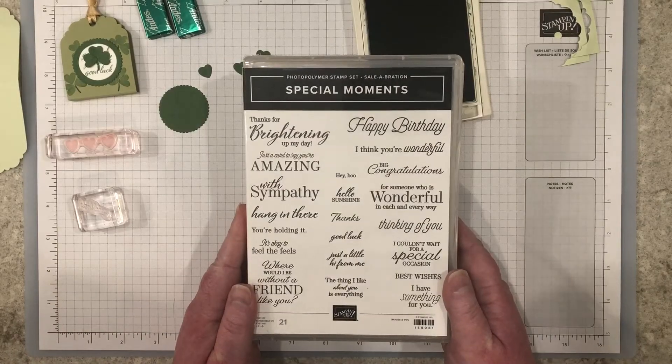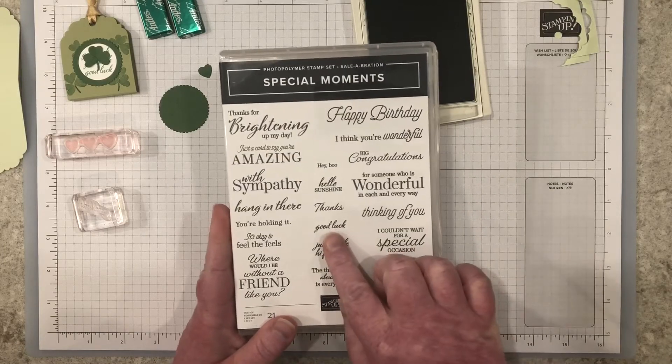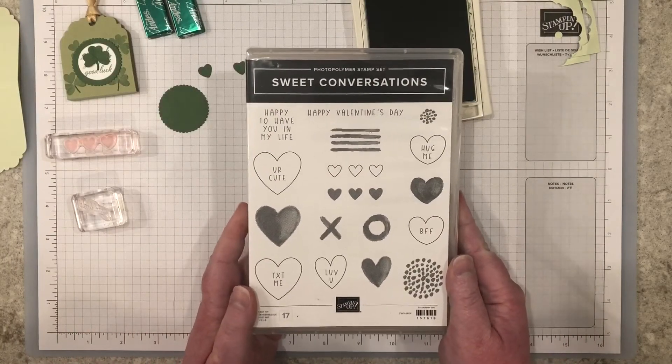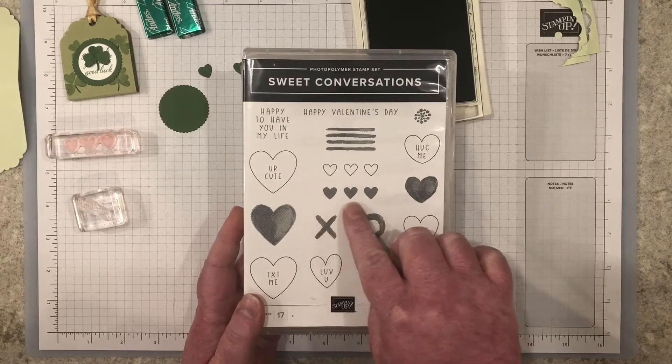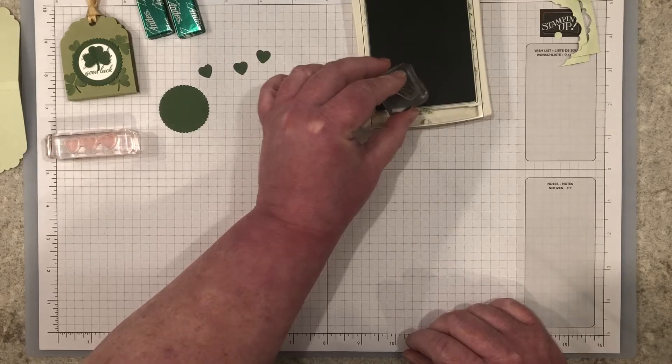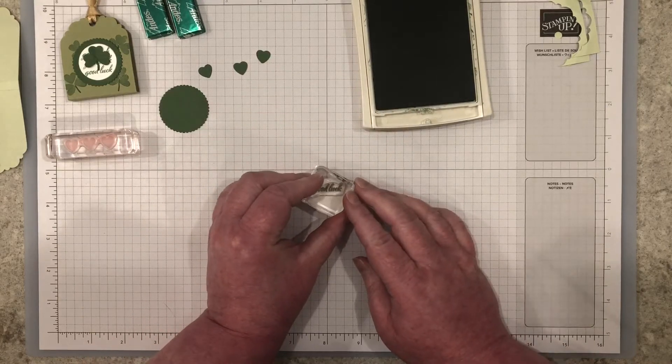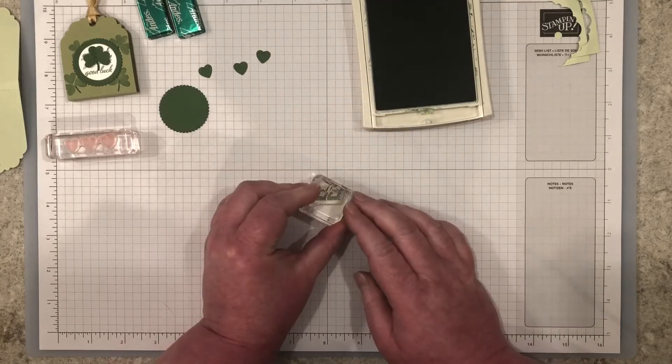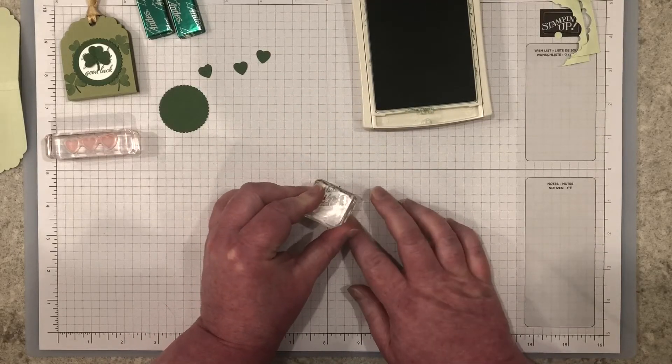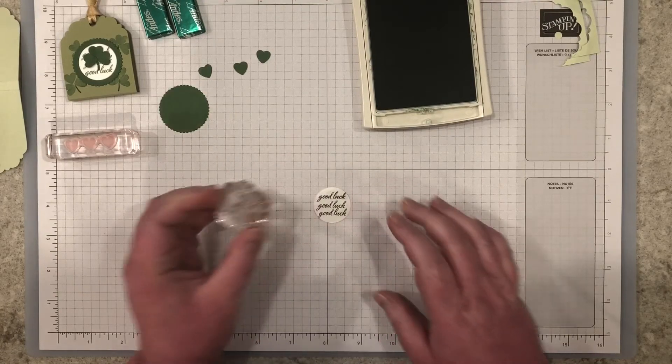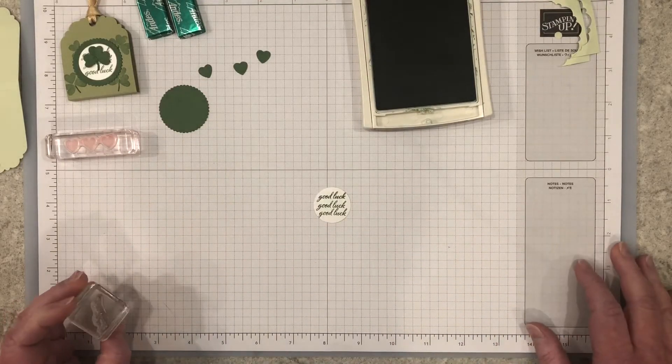Today's project uses the special moments stamp set. We're using the good luck image and the sweet conversation stamp set. We'll be using the solid trio of hearts. With garden green ink, stamp good luck three times vertically down the center of your circle. This will provide the backdrop of your shamrock.